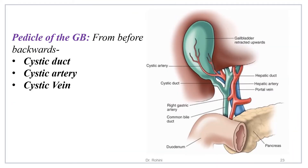The pedicle of the gallbladder consists of the cystic duct (from before backwards), the cystic artery, and the cystic vein — these three structures form the pedicle of the gallbladder.